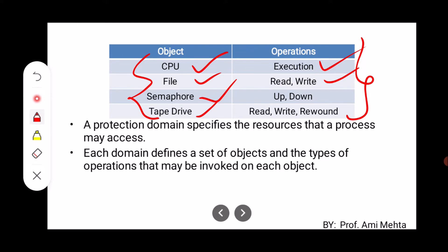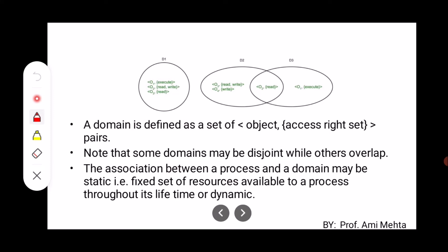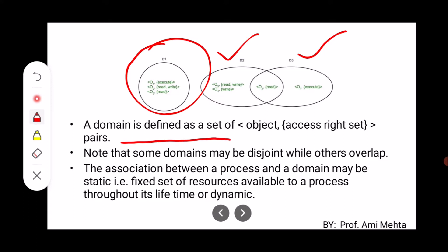Now, what is the task of a protection domain? The protection domain specifies the resources that a process may access. Each domain defines a set of objects and the types of operations that may be invoked on each object. There are domains D1, D2, and D3. A domain is defined as a set of objects with access rights, enclosed in brackets. Note that some domains may be disjoint — D1 is disjoint — while others, like D2 and D3, overlap.